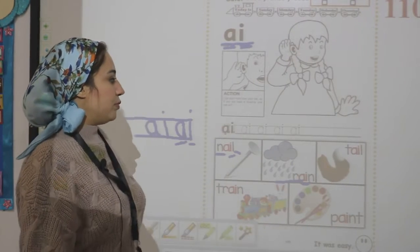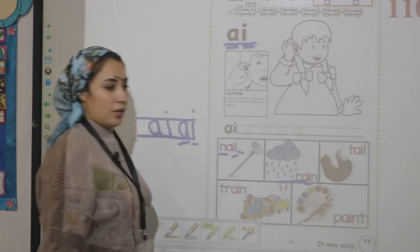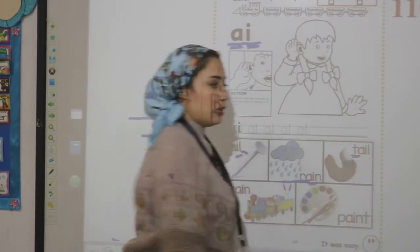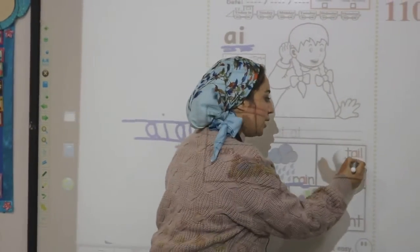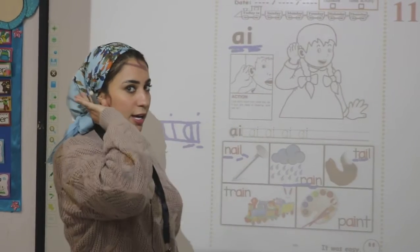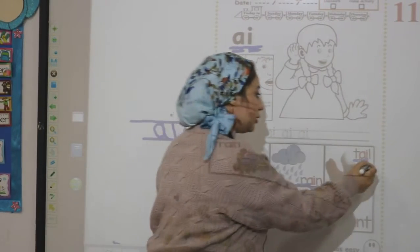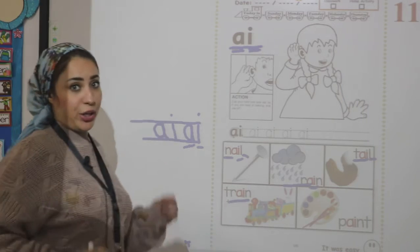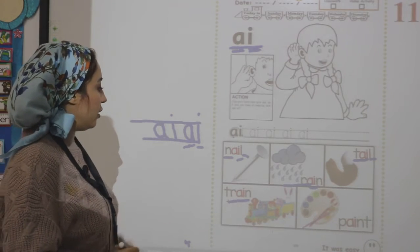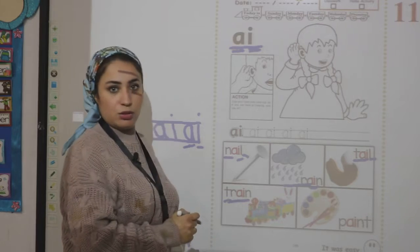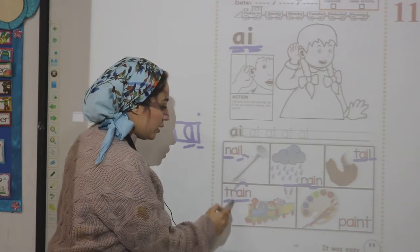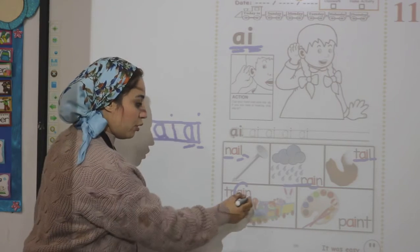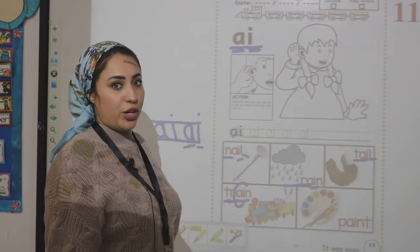What is the first sound in the word train? T. And what is the middle sound? A. And what is the last sound? N. Train. Pain.